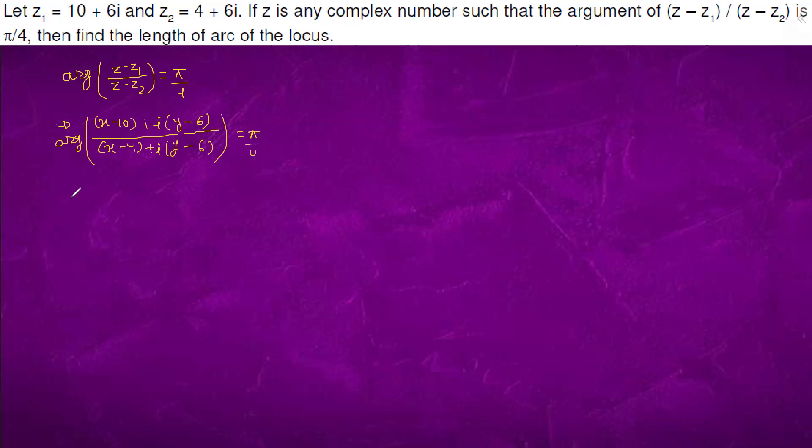We will solve this further by rationalizing the denominator. It will be simply (x - 4)² + (y - 6)² in the denominator, and (x - 10 + iota(y - 6)) times (x - 4 - iota(y - 6)) in the numerator.